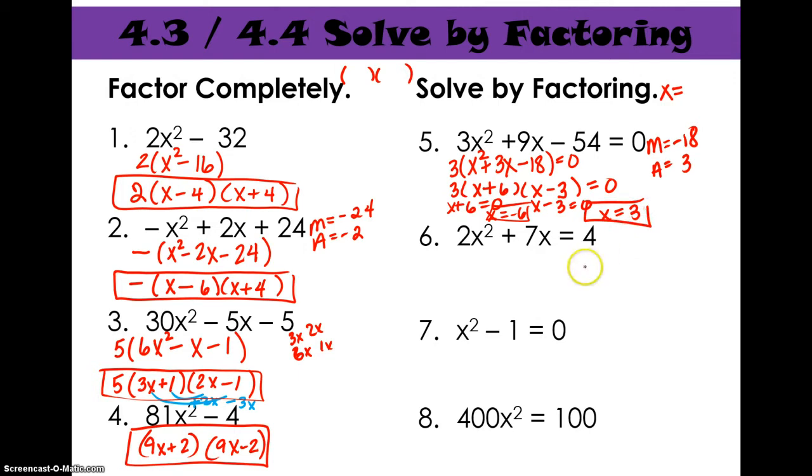All right, number six. This doesn't look like number five. It's not ready to go yet because it's not equal to zero. So the first thing we always need to do is set it equal to zero. So we're going to subtract four from both sides. So we get 2x squared plus 7x minus 4 equals zero. No GCF. Leading coefficient is not one. So it's going to be a trial and error. So we know those are going to be 2x and 1x.